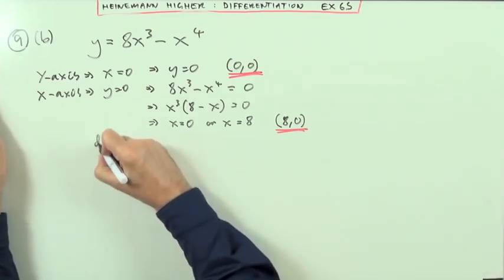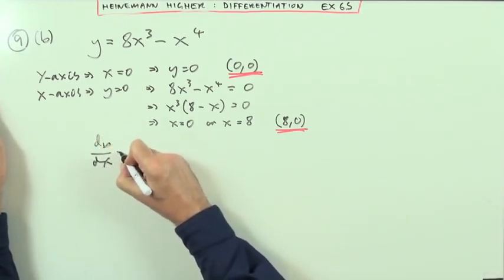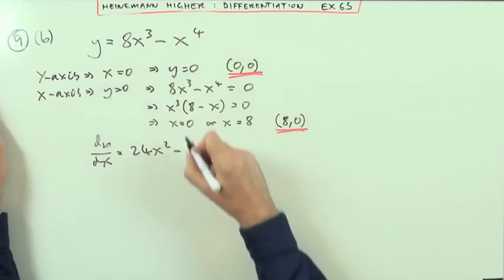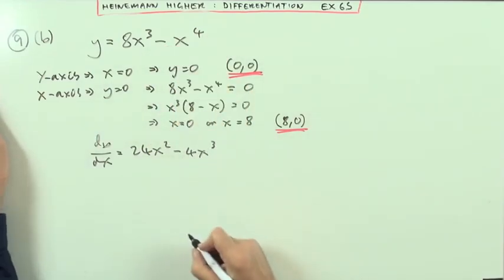Next part. Right, what about the derivative? dy/dx would be, multiply by the power, 24, multiply by the power, 4, down one of the power in each case.